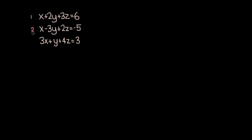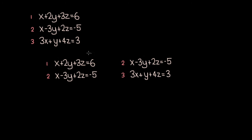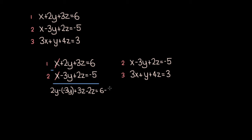Let's label these equations 1, 2, and 3, and group together equations 1 and 2, and equations 2 and 3. We have two pairs of two equations, and we'll try to eliminate x from both pairs. For the first pair, equations 1 and 2, we subtract equation 2 from equation 1. The x terms cancel, and we get 2y minus negative 3y plus 3z minus 2z equals 6 minus negative 5, which simplifies to 5y plus z equals 11.